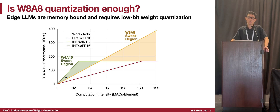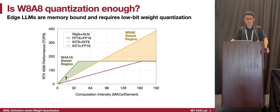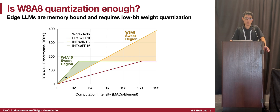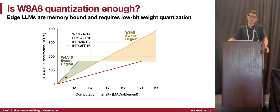If the batch size goes beyond 80, W8A8 quantization is more beneficial because the peak throughput of the INT8 tensor core is much higher than that of the FP16 tensor core. However, if we go below this value, we enter the memory-bound region. In this case, the tensor core throughput does not guarantee peak performance for the entire region.